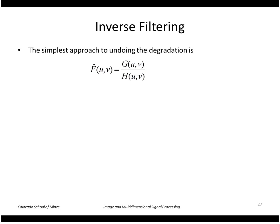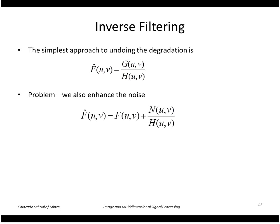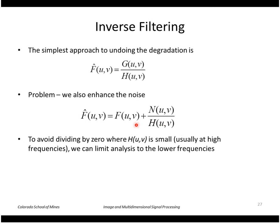Let's look at how to undo this degradation. The simplest approach would be to divide by the degradation function H, since our degraded image G equals F·H plus N. But if we divide by H, we don't get back our original image — we also enhance the noise term N/H. In places where H is small, for example at high frequencies, we may have large noise values, which would totally corrupt our result. So we want to avoid this division where the values of H are small.